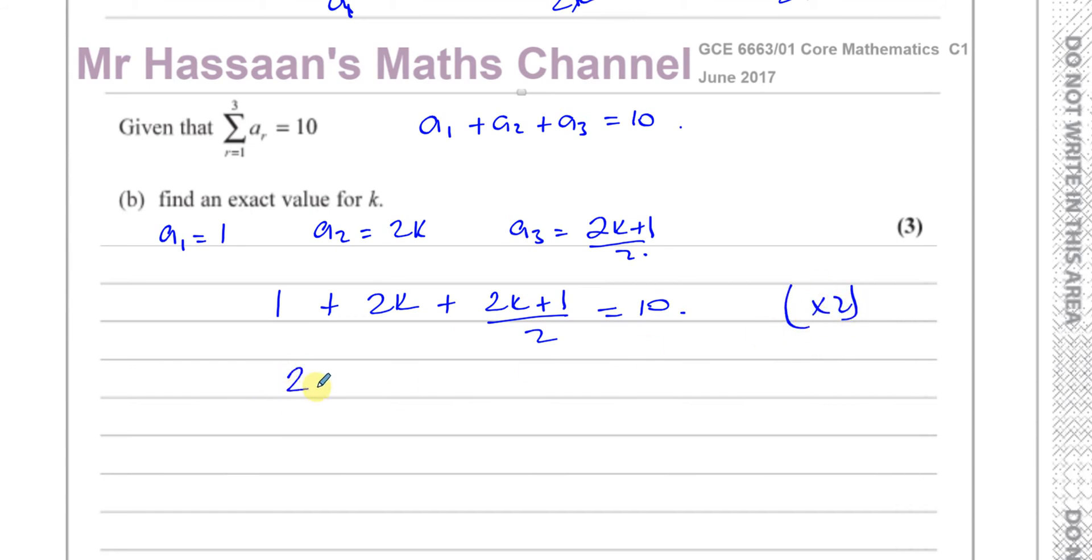I have 2 plus 4k plus 2k plus 1 equals 20, just multiply both sides by 2. So this gives me 6k plus 3 equals 20.